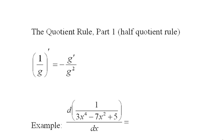The quotient rule part one, the half quotient rule. I call this the half quotient rule because it's merely one over some function, and this prime means taking the derivative of one over g of x. The rule says this equals negative g prime over g squared.